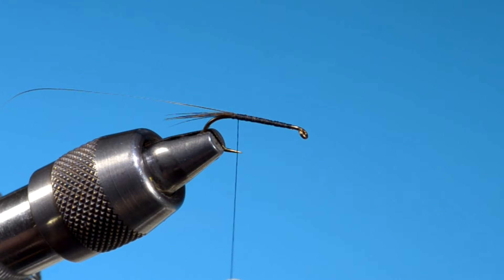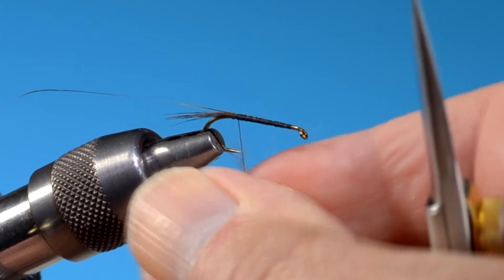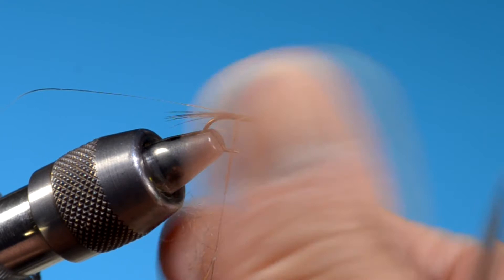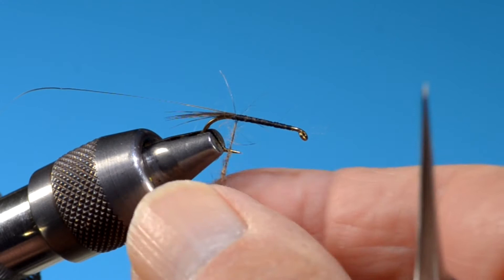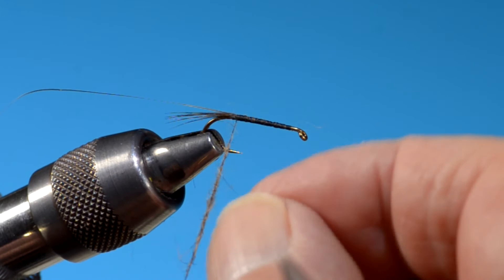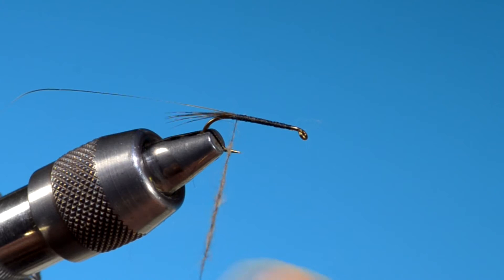Now, when I dub this, I like to have the first part of this, I like to make it kind of an abdomen, so I don't want the dubbing to be all that buggy here. So I'll pick out these guard hairs. I try to initially get a little bit of dubbing that doesn't have a lot of guard hairs in it, but it's not easy if you've just cut some stuff off a hare's mask. But I'll try to keep it as guard hair-free.